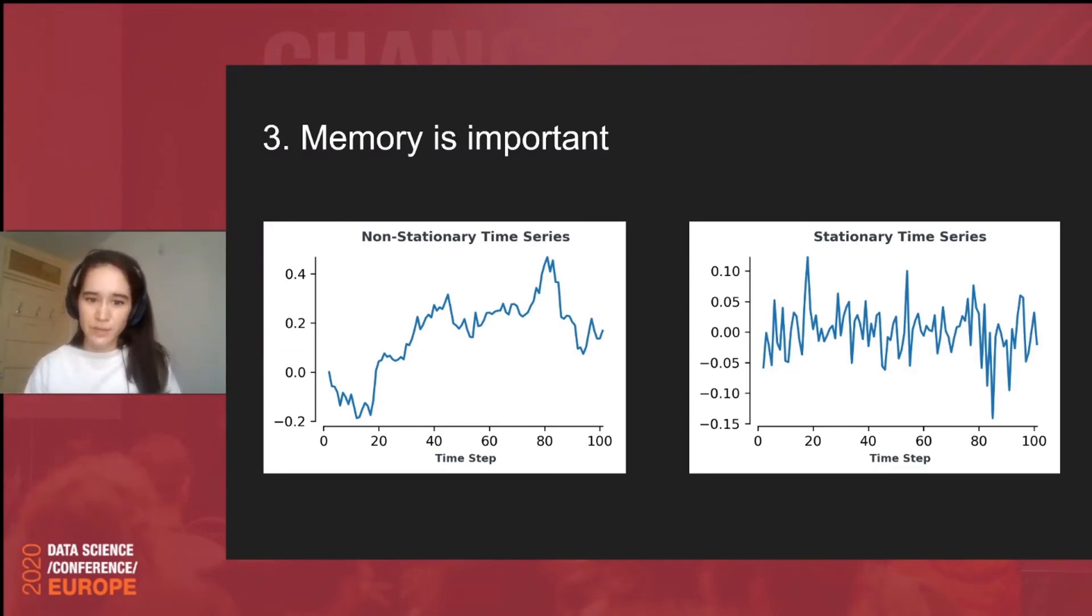There's a bit of a problem in this approach. By differencing a time series, we are effectively removing any memory. So, we're removing any predictive power or any information in the time series that might have predictive power. So, that's why the title of this section is called Memory is Important because it really is. So, on the left in the non-stationary time series, if we were to extrapolate the time series from time step 20 to 30, we could make a fairly good prediction of what will happen at time step 40.